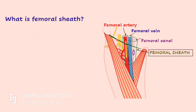What is the femoral sheath? In this diagram you can see a green colored structure, a sheath which is formed by fascia. If you look at it, it is broader above and narrow below, so it is funnel-shaped. We can see here it is enclosing or surrounding the blood vessels.